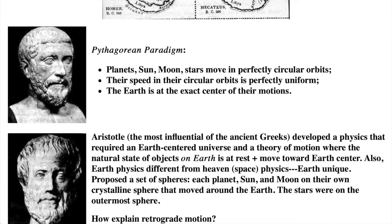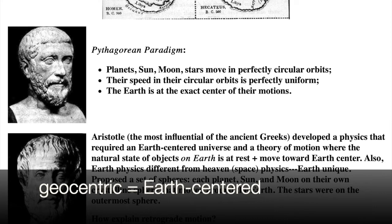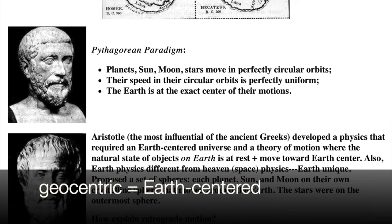The Pythagorean paradigm has three key points about the movement of celestial objects. Number one, the planets, sun, moon, and stars move in perfectly circular orbits. Heavenly objects should have heavenly divine motions. Number two, the speed of the planets, sun, moon, and stars in their circular orbits is perfectly uniform. Number three, the Earth is at the exact center of the motion of the celestial bodies. This is a geocentric universe.